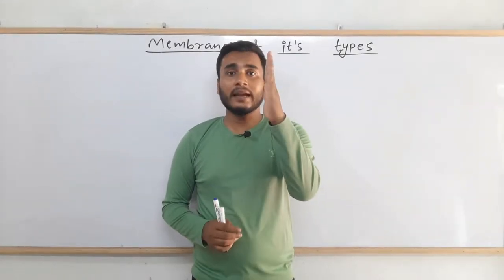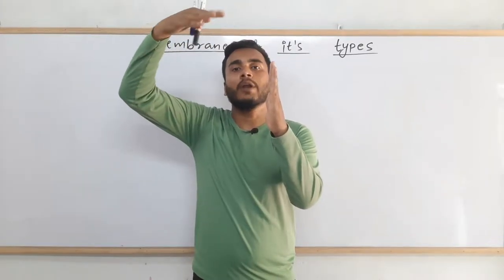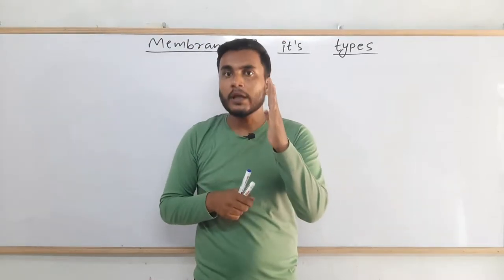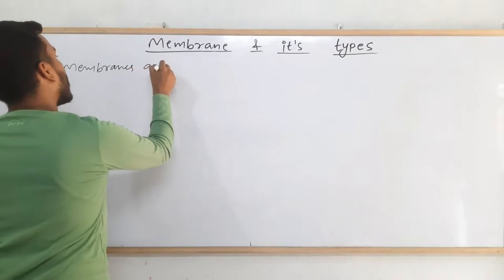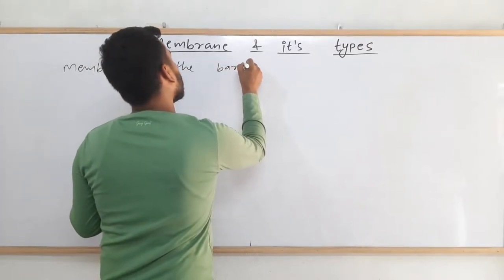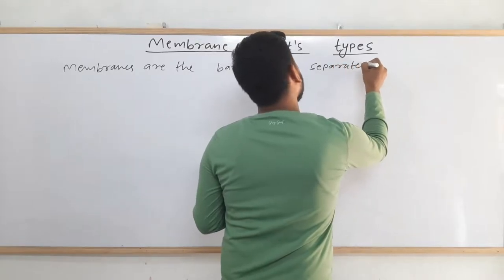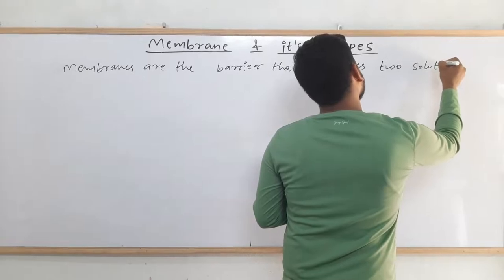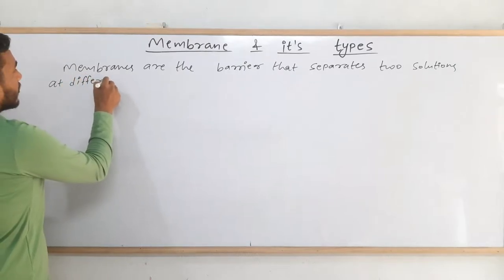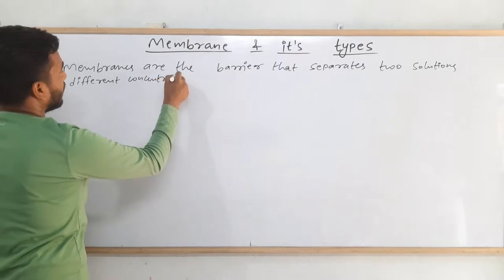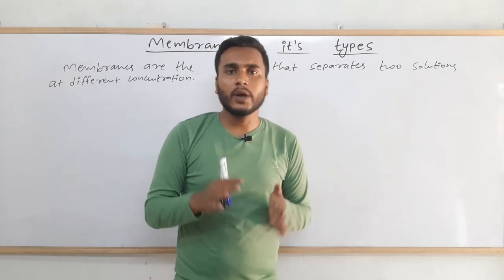In colligative properties, membranes are the barrier that separates two solutions. One is at higher concentration and another one is at lower concentration. Higher concentration means it has more amount of solute and lower concentration means it has less amount of solute. Membranes are the barrier that separates two solutions at different concentrations.